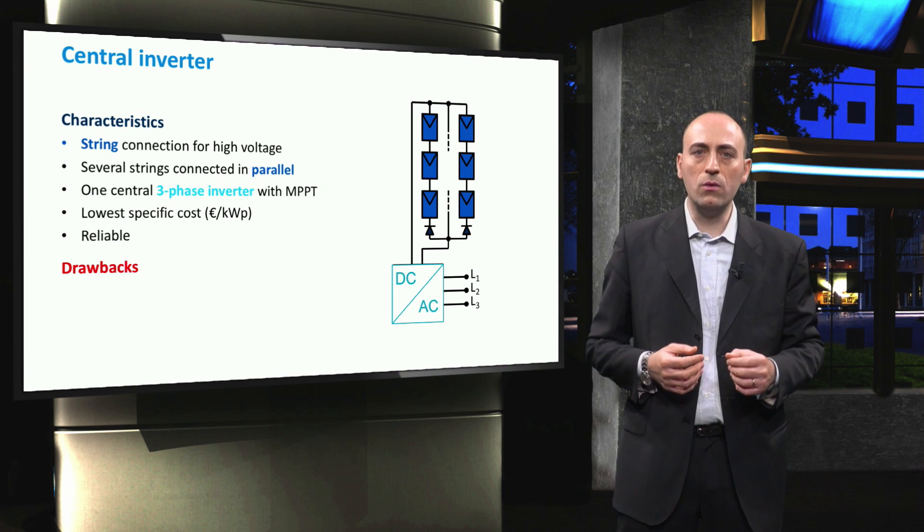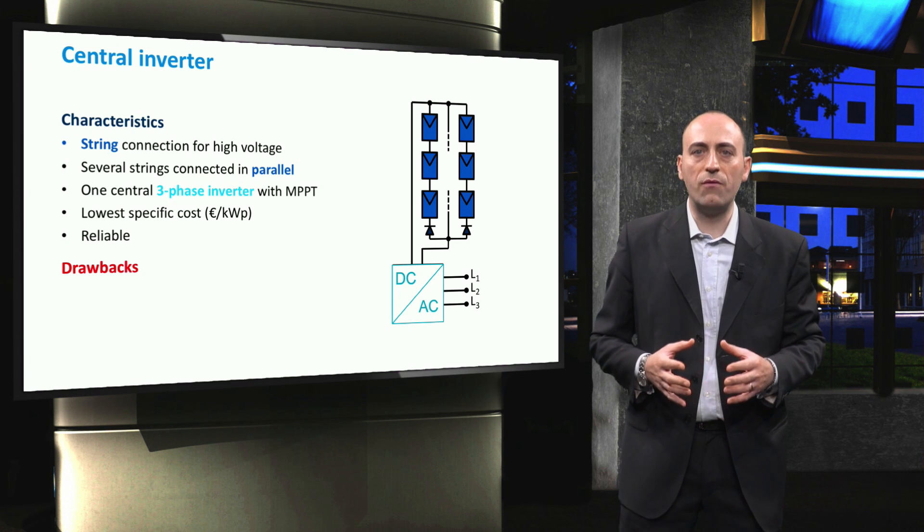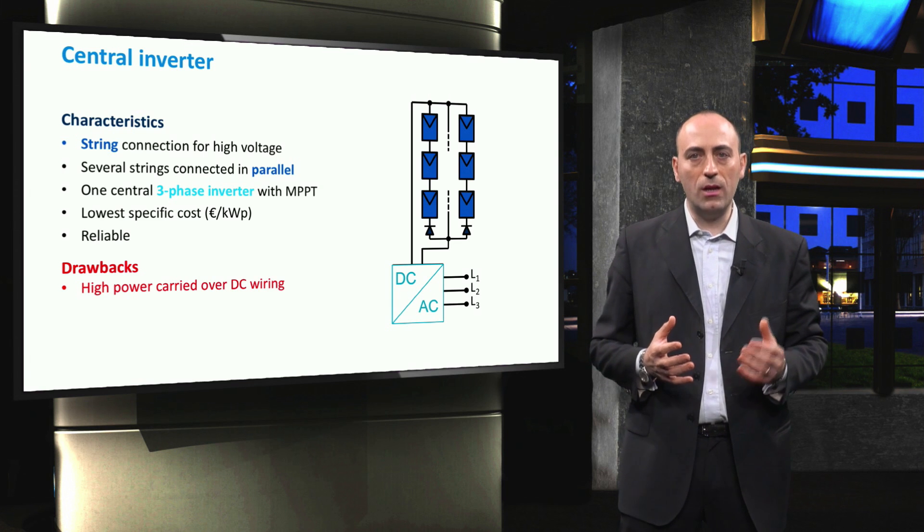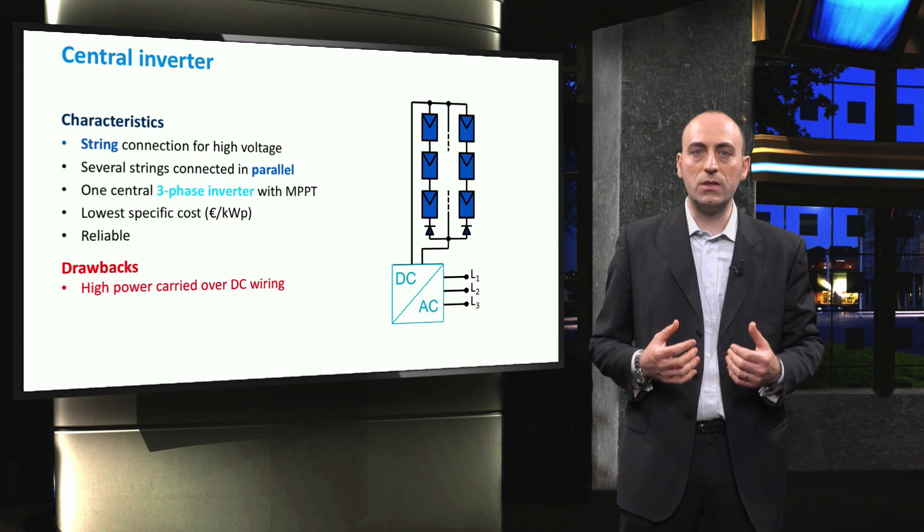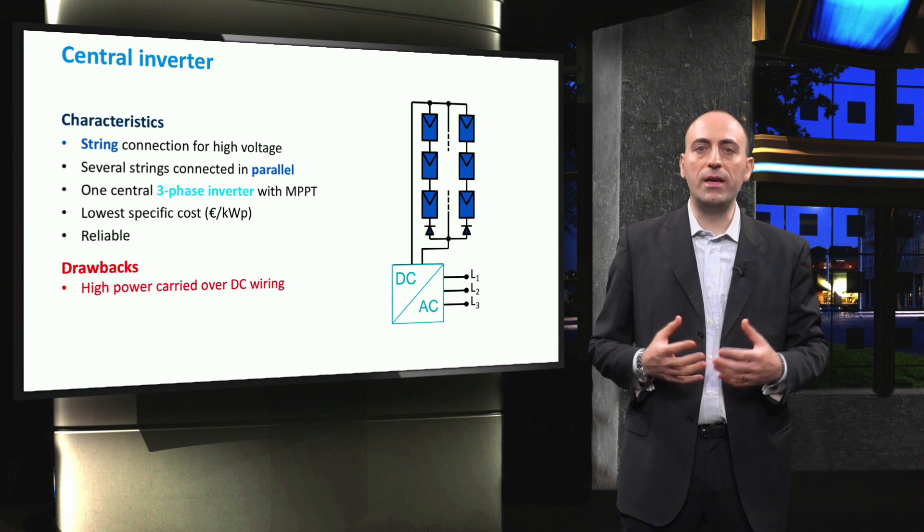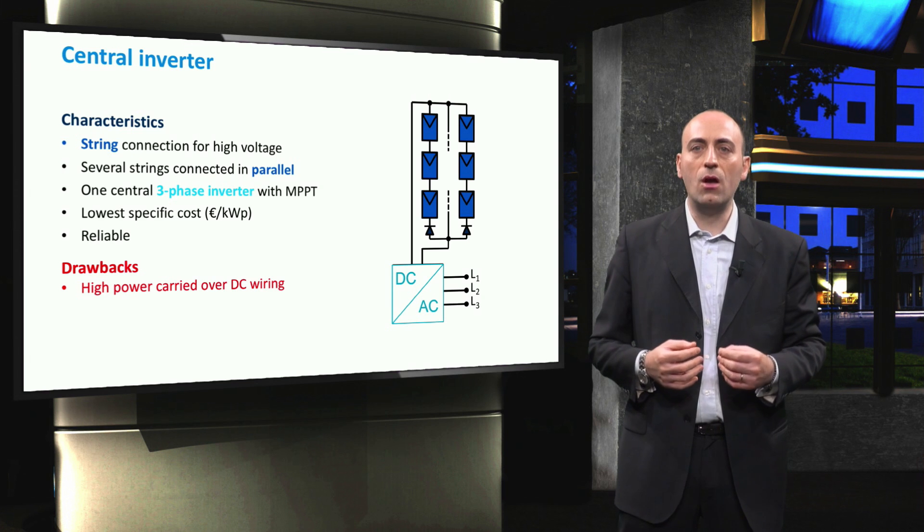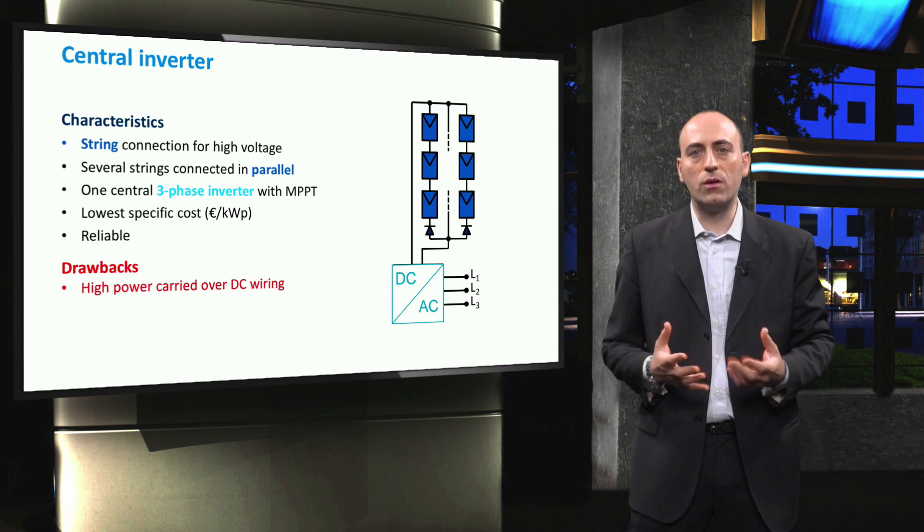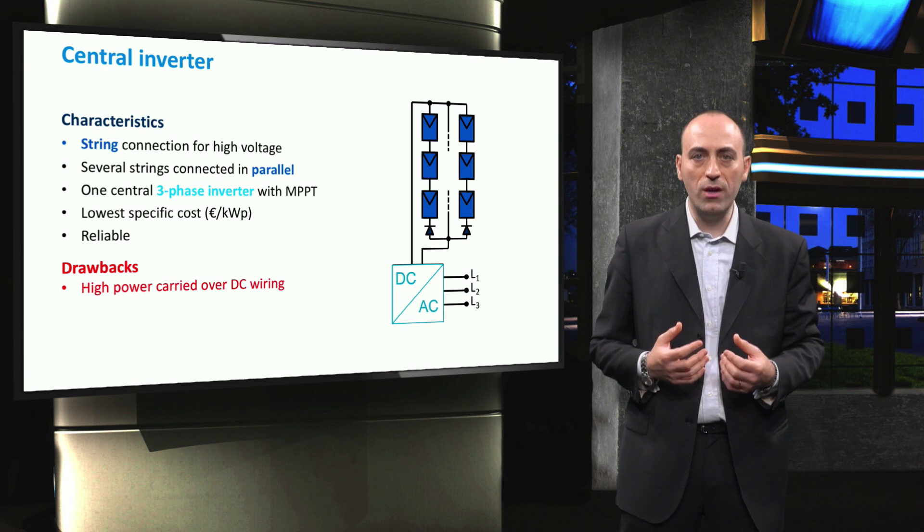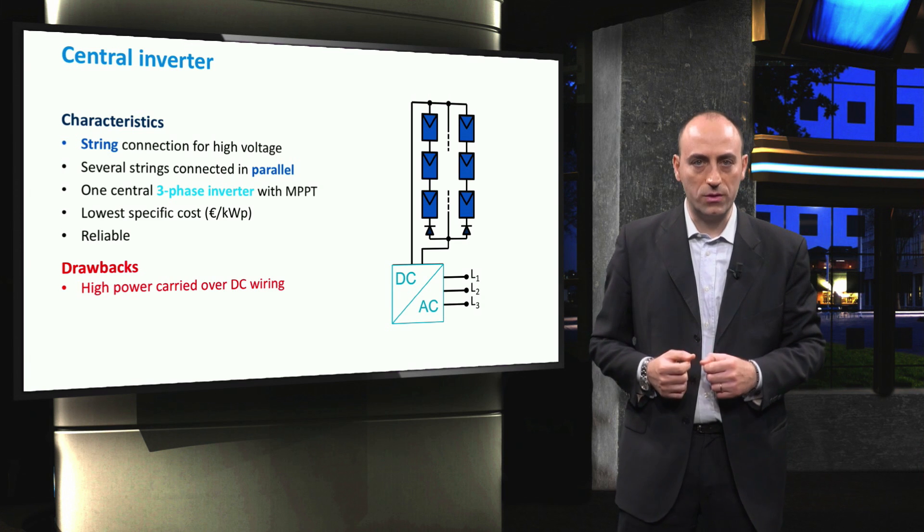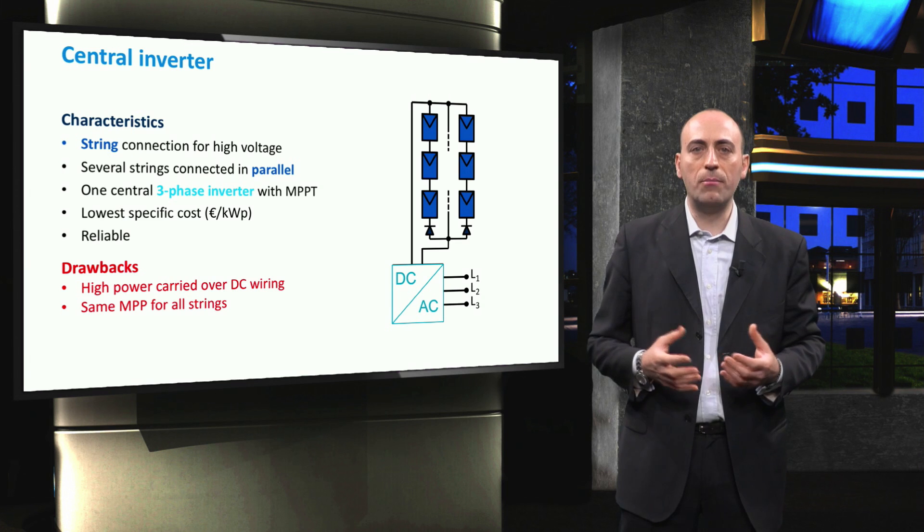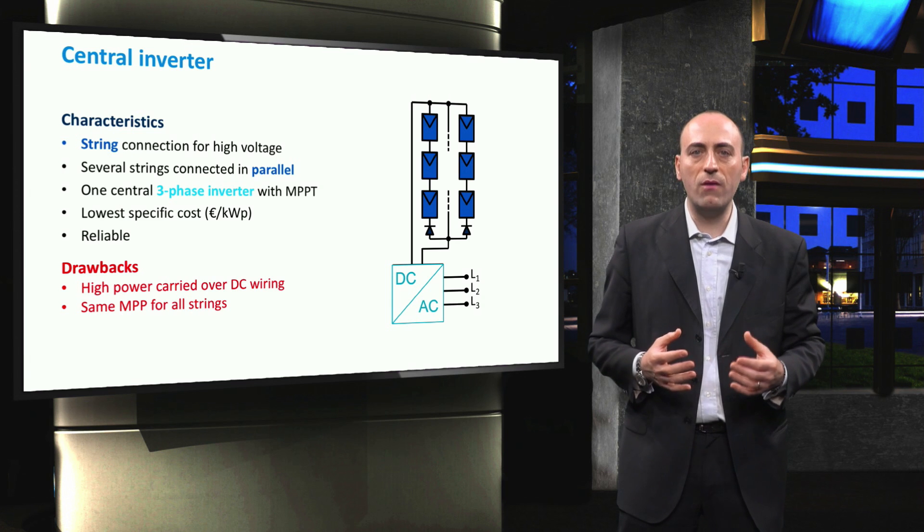In spite of their simplicity and low specific cost, central inverter systems suffer from some disadvantages. First, we have that due to the layout of the system, a large amount of power is carried over considerable distances using DC wiring. Therefore, the engineer has to carefully choose the type and thickness of DC wires, because this can cause safety issues related to fault DC currents, and the need for thick cables insulation and special circuit breakers can lead to a significant cost increase. Another drawback is that all strings are operated at the same power point, which might not match the maximum power point of each string, and then be problematic in a very large installation.